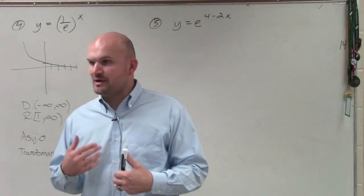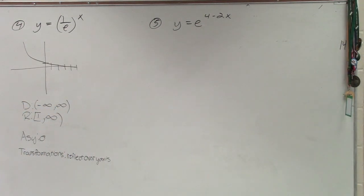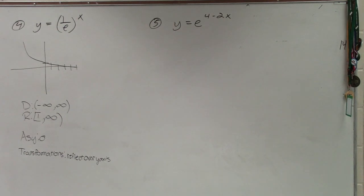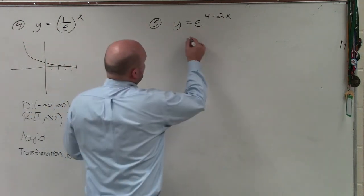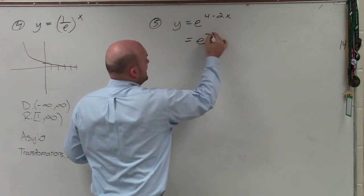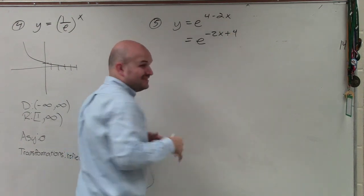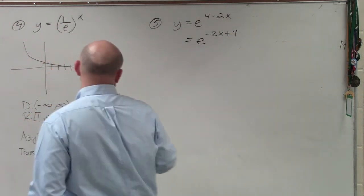And the main important thing, guys, when we're doing a problem like this is to make sure that you have your x with a coefficient of 1. So the first thing that I would do is rewrite this as e to the negative 2x plus 4. Then you guys can see I can factor out a negative 2.